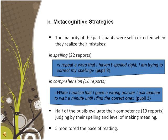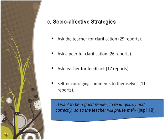Concerning the metacognitive strategies identified, though being very limited, the majority of participants were engaged in self-correction processes when they realized their mistakes, mostly in spelling or comprehension. Moreover, 18 pupils claimed that they evaluated their competence after every reading task, judging themselves by the quality of their spelling and the level of meaning-making from the text. Few pupils mentioned monitoring the pace of reading. Data revealed that socio-affective strategies appeared to be the most commonly used amongst poor bilinguals, with asking the teacher for clarification being the most reported strategy. Asking a peer for clarification was also preferred. 17 pupils claimed that they needed feedback about the correctness of their answers, their proper pronunciation of words, or their understanding of the text.